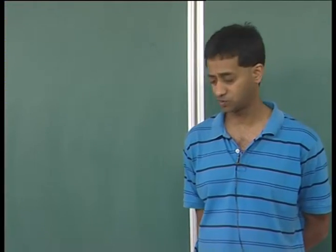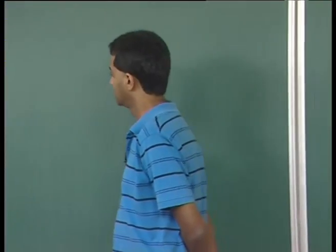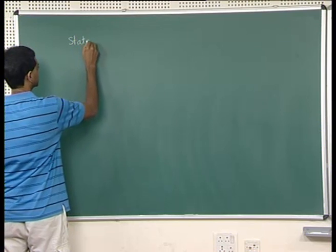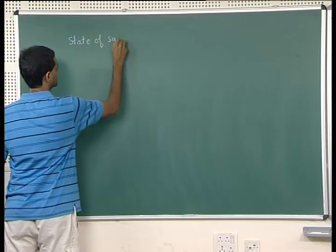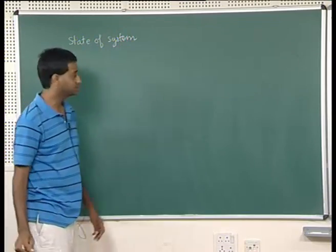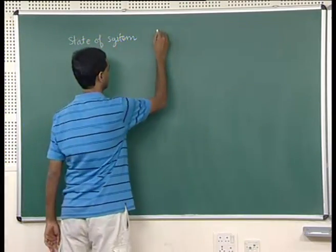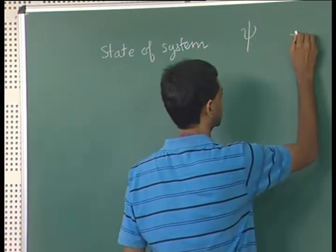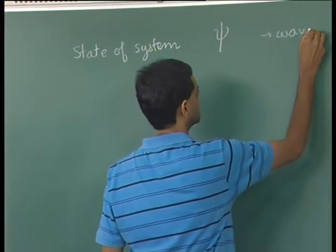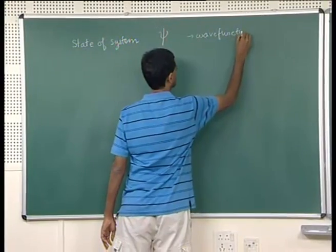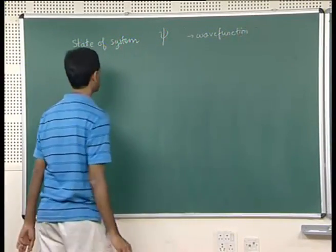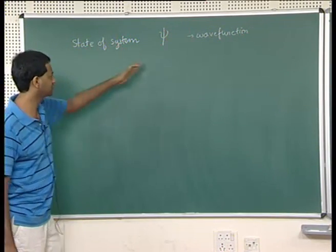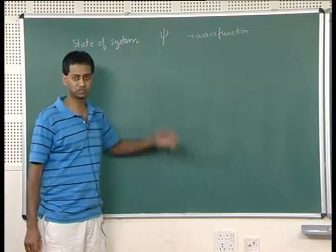If you recall the basic postulates of quantum mechanics, it says that the state of the system is described by an object called the wave function, denoted by psi. The state of the system is denoted by a wave function and this is a function of the coordinates of all the particles.